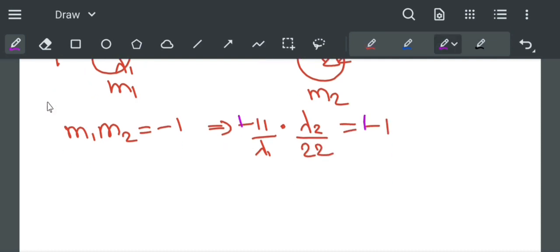The negatives cancel, 11 and 22 simplify to give λ₂/λ₁ = 2.